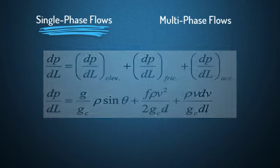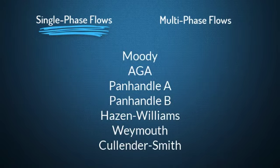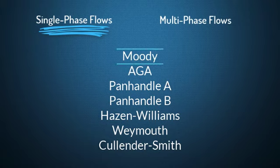The empirical correlations for calculating single-phase flow are Moody, AGA, Panhandle A, Panhandle B, etc. Engineers always use the empirical correlation of Moody in software.